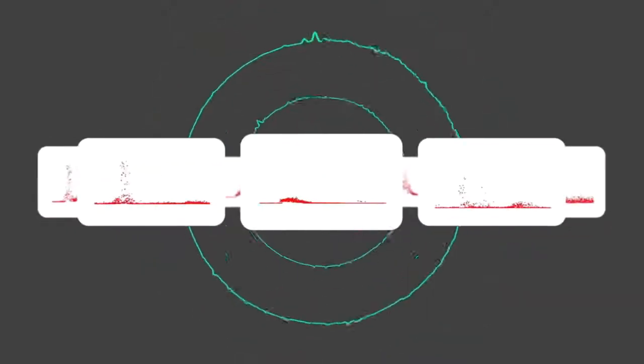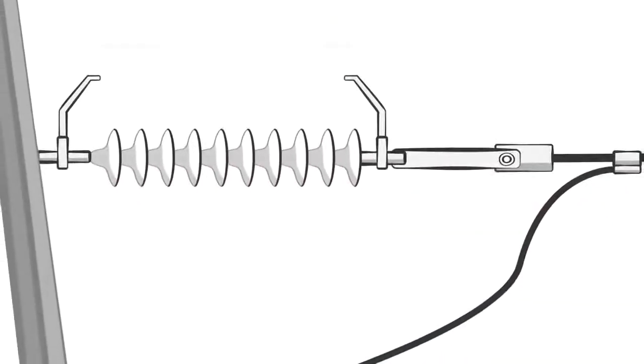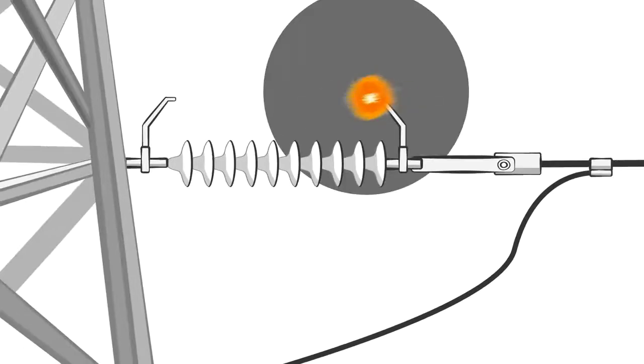Another common discharge type is the corona discharge. This discharge typically occurs around sharp corners or discontinuities on the surface of an object. Corona discharges are usually not problematic, but they may damage nearby materials or insulators.